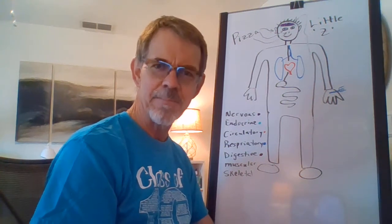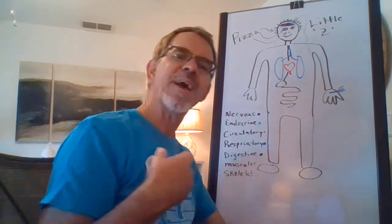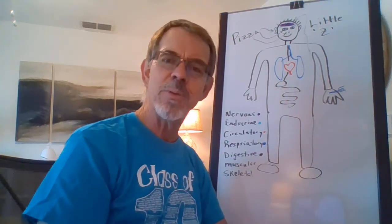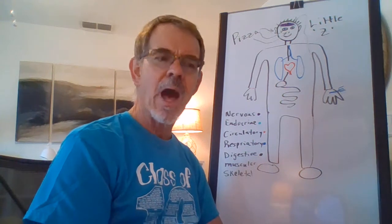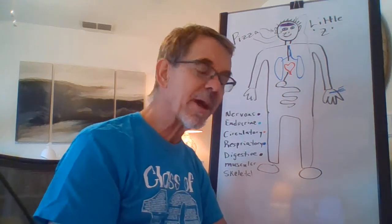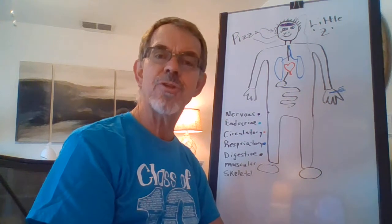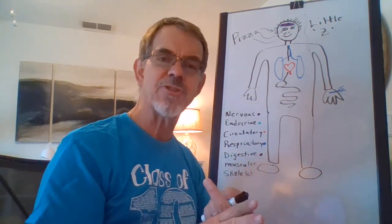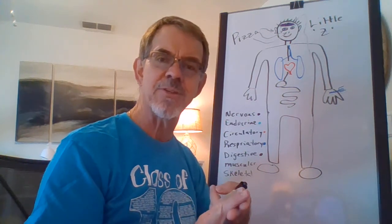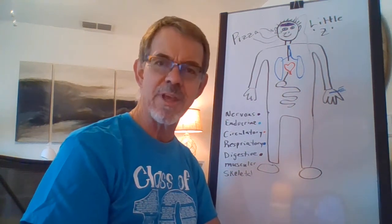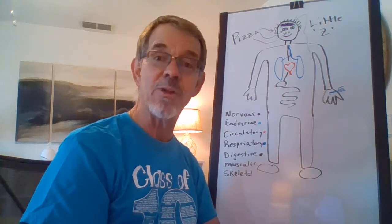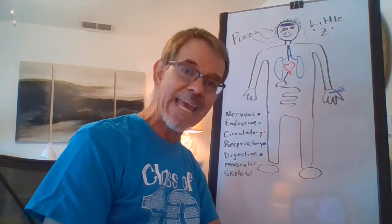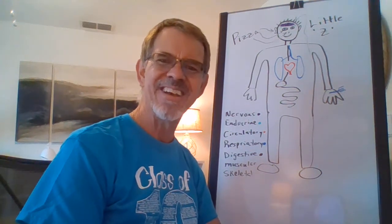Good job, little Z. So anyway, just by his mom walking in the door with that delicious pizza, little Z's nervous system, endocrine system, circulatory system, respiratory system, digestive system, muscular system, and skeletal system all worked together for that one task. I hope that gives you an idea about how amazing and complicated your body is. Go through the lesson as many times as you need to — there's no reason you should not get 100% on the quiz at the end. Don't forget to hit Submit Assignment. Have a great day, guys, and I miss you all very much.